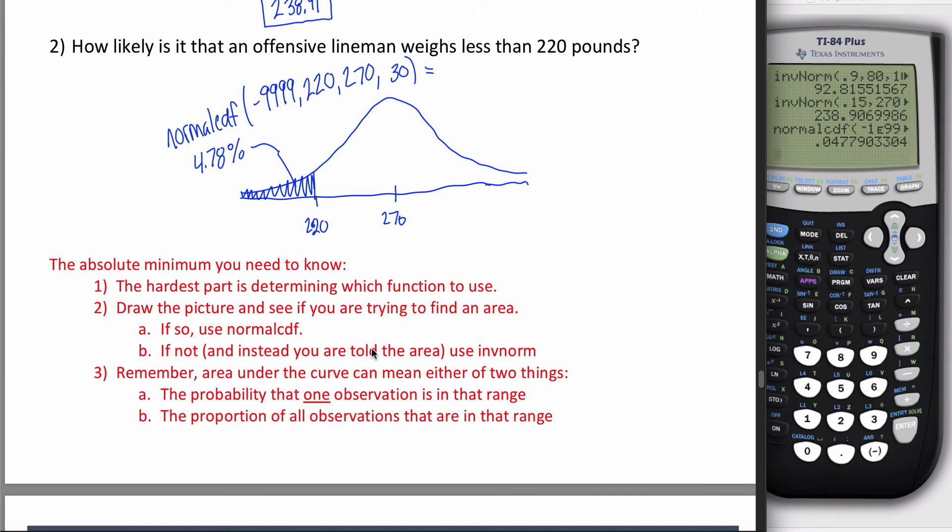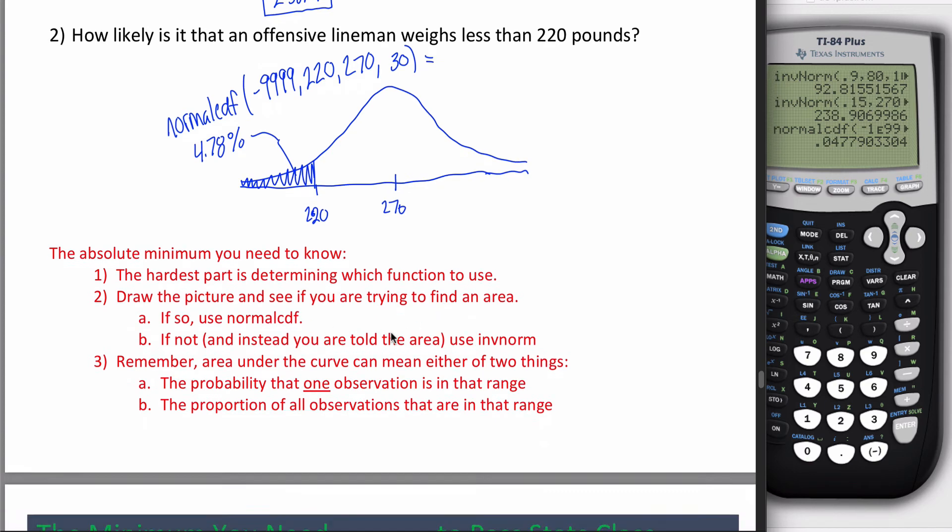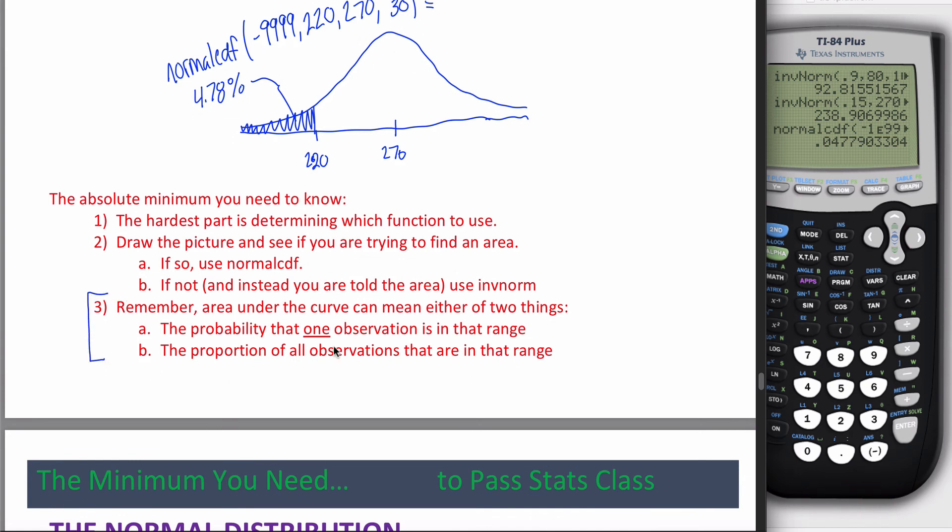What's the absolute minimum you need to know to differentiate these two functions? That's the hardest part for most students - to tell the difference in the pressure of a test. My advice? Draw the pictures first. Always draw the pictures. If you already know the area, you're using inverse norm. If you're trying to find the area, you're using normalCDF. If you understand what the area represents, it'll make it easier to figure out if you're told the area or trying to find it. If you're given the value of the probability or proportion, you're using inverse norm. If you're asked to find the probability or proportion, you're using normalCDF.